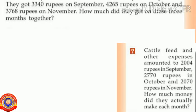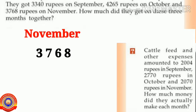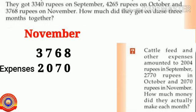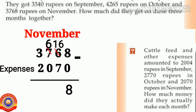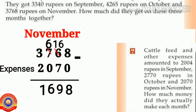Amal's family got 3768 rupees in November and had to spend 2070 rupees as expenses. To find the amount they made in November, subtract 2070 from 3768: 8 minus 0 is 8. We can't subtract 7 from 6, so borrow 1 from 7 — 6 becomes 16 and 7 becomes 6. Then: 16 minus 7 is 9, 6 minus 0 is 6, and 3 minus 2 is 1. The answer is 1698. The amount they made in November was 1698 rupees.